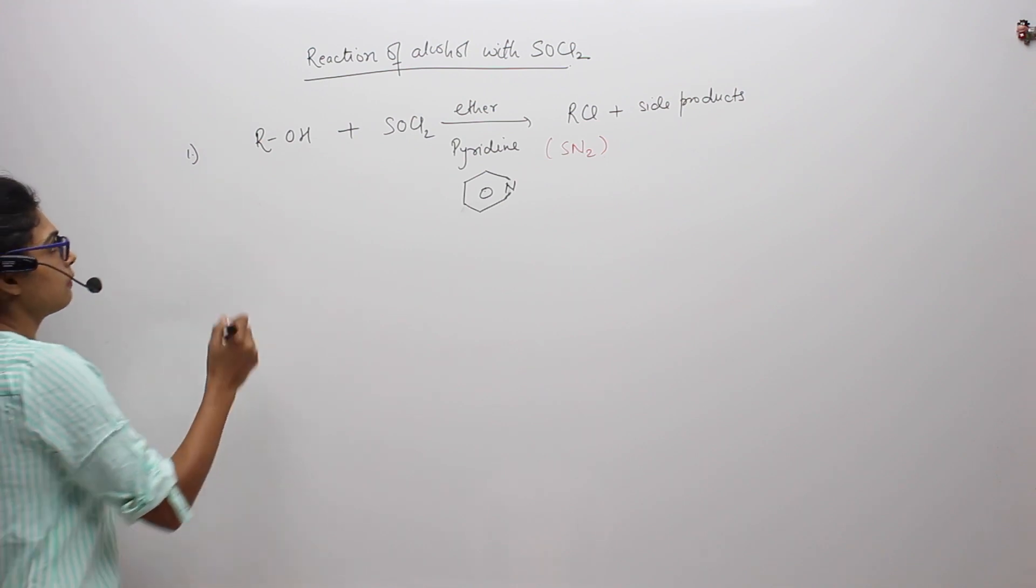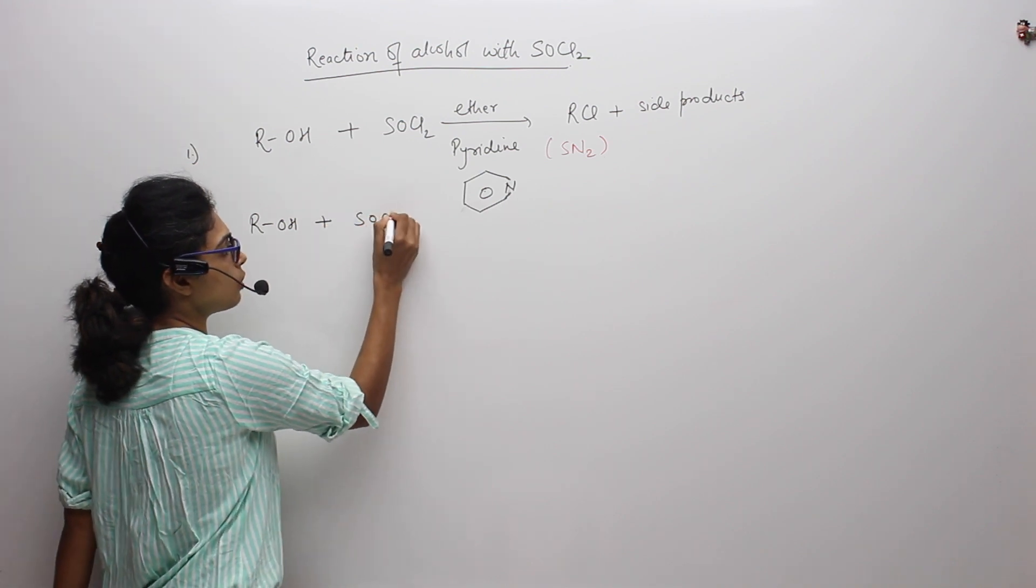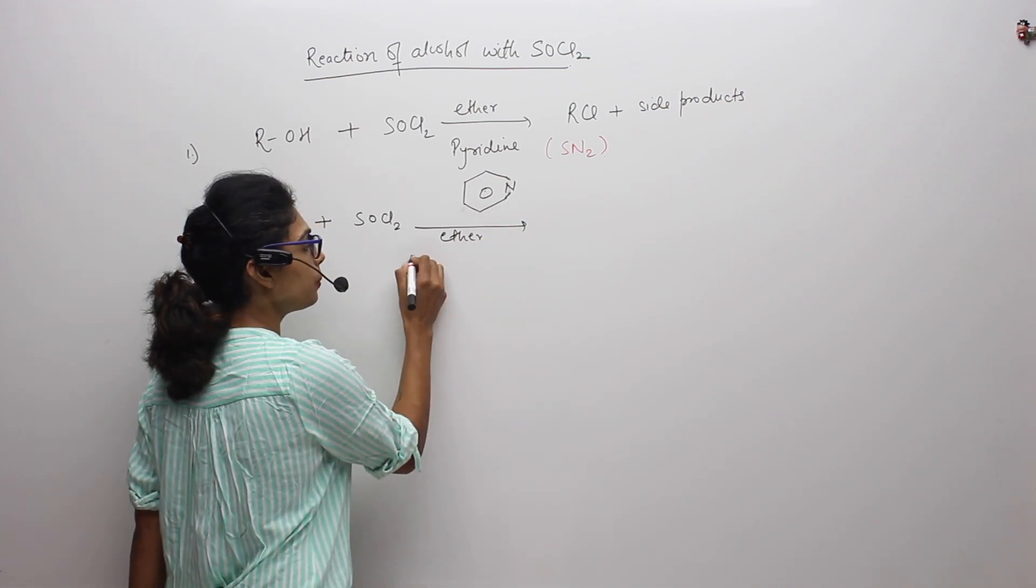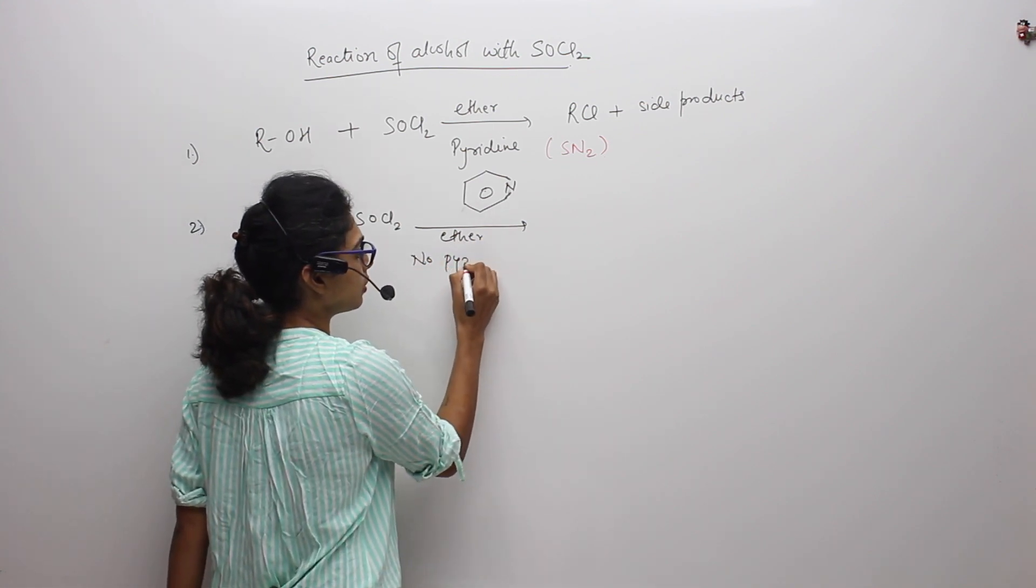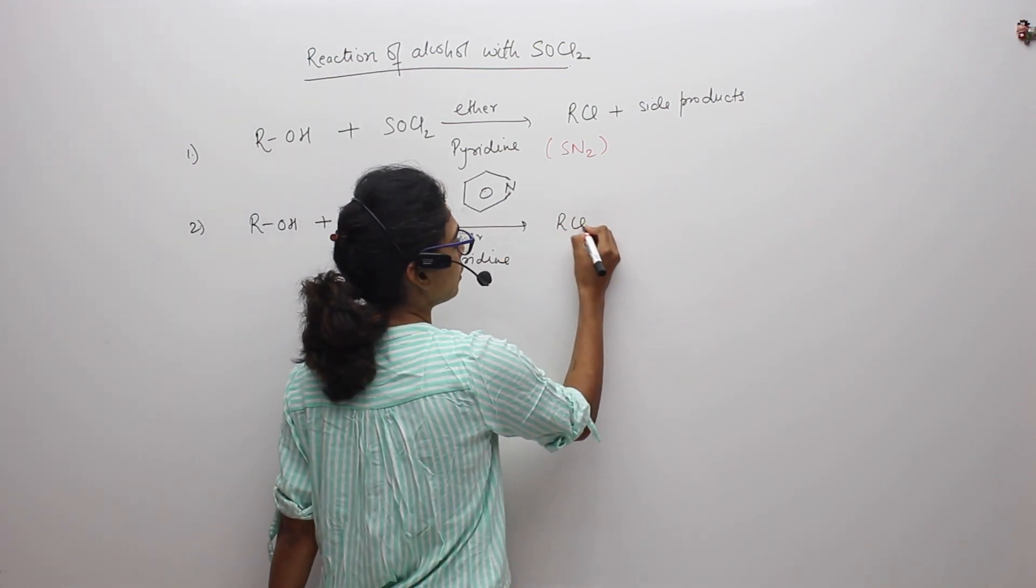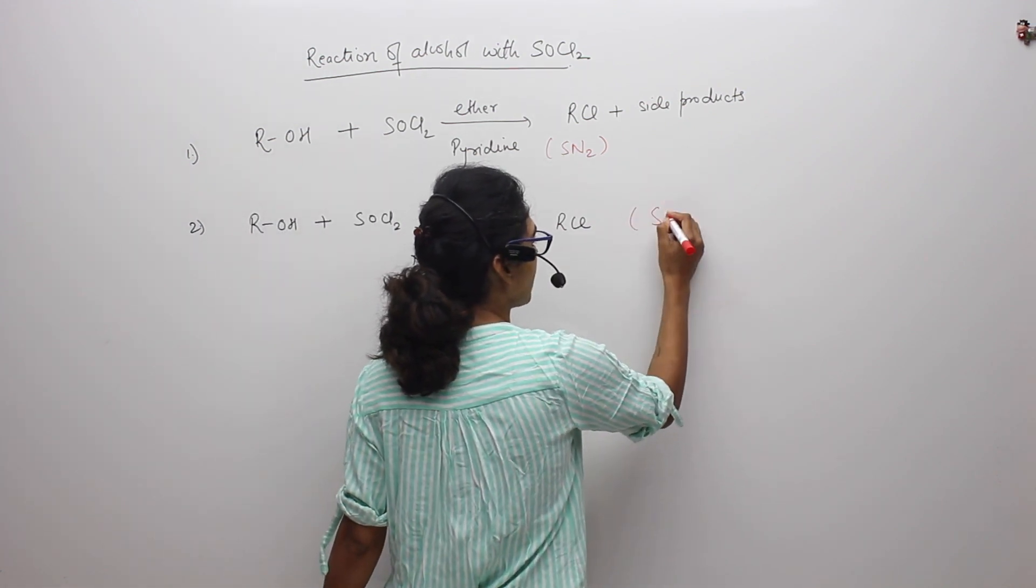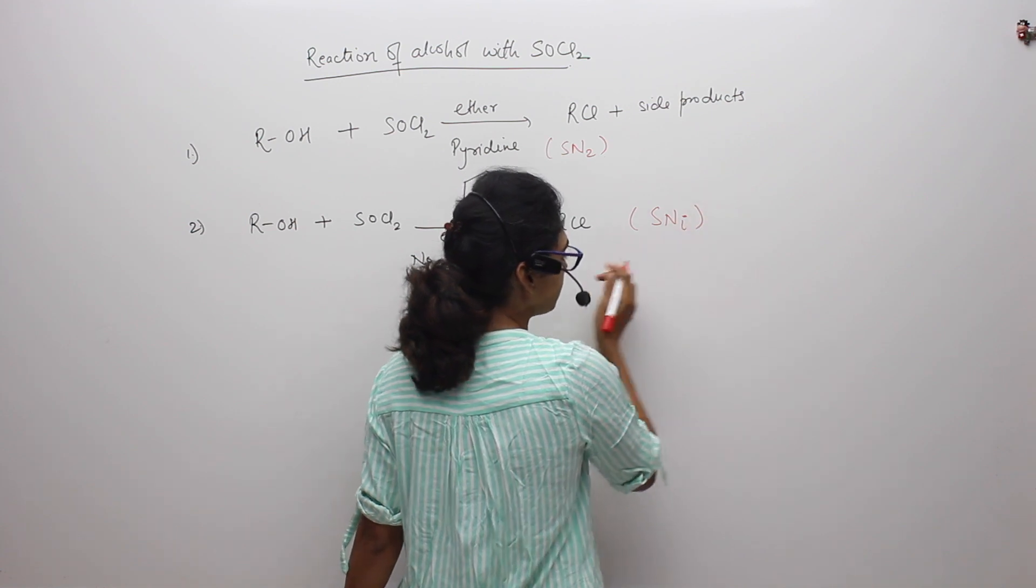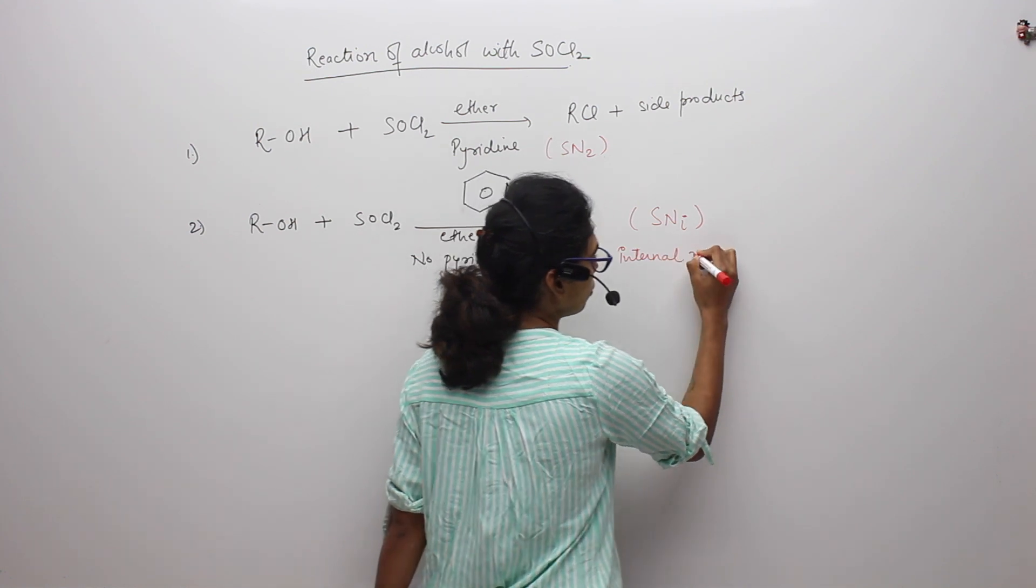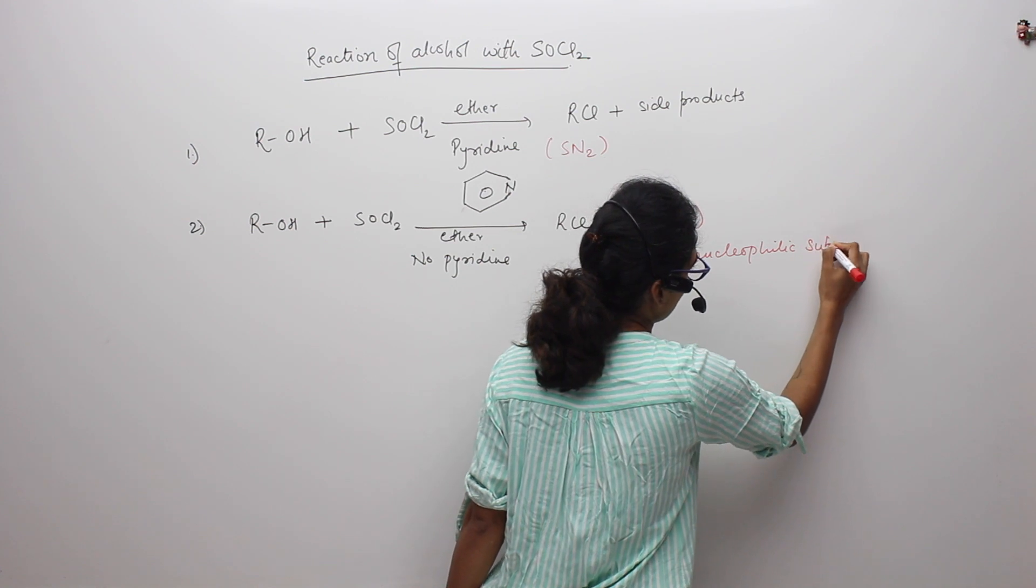Same reaction when we do in the absence of pyridine. So that means again we have taken ROH in the presence of SOCl2 and ether. No pyridine. The products which are formed are same. So we again get RCl. But the mechanism what this reaction will be following will be SNi mechanism. This is called internal nucleophilic substitution. This we will be studying later on.